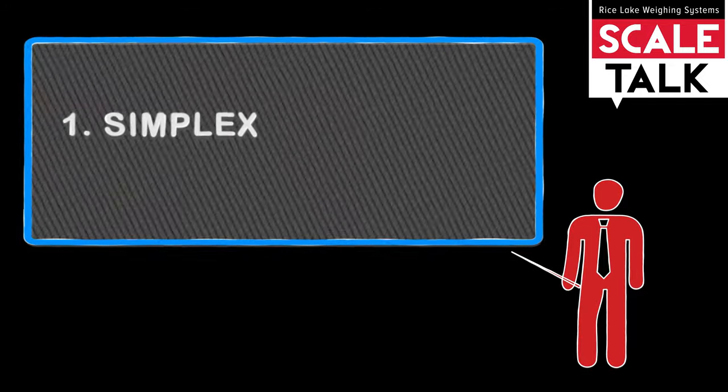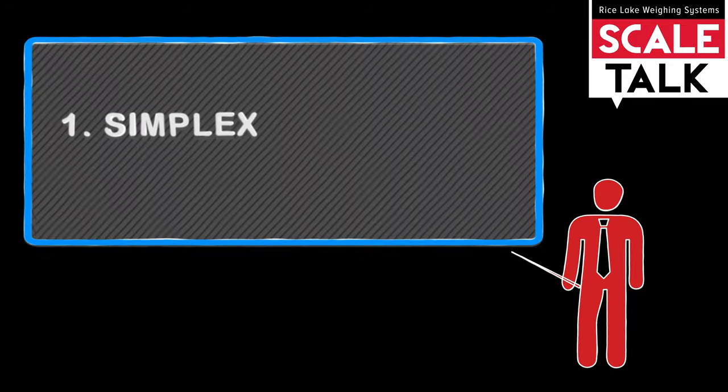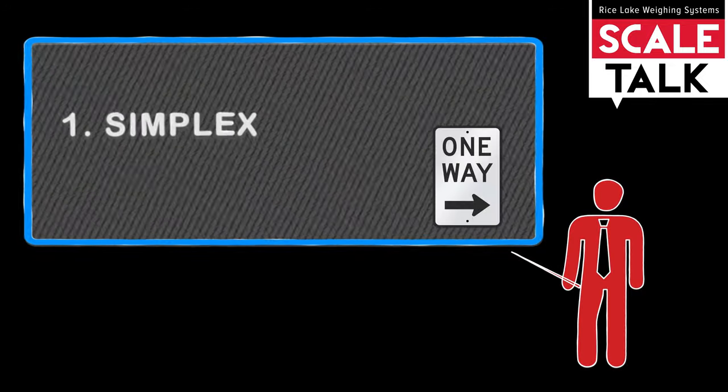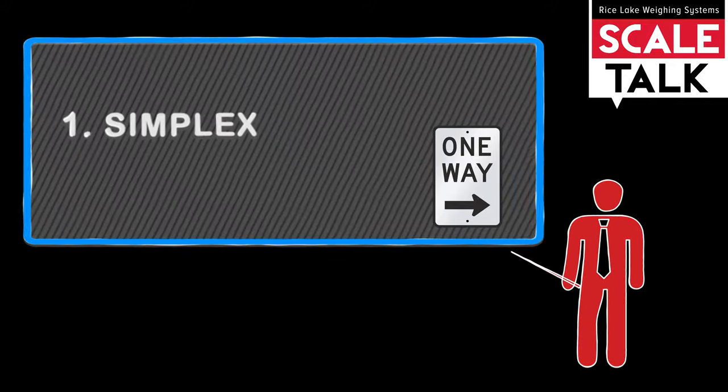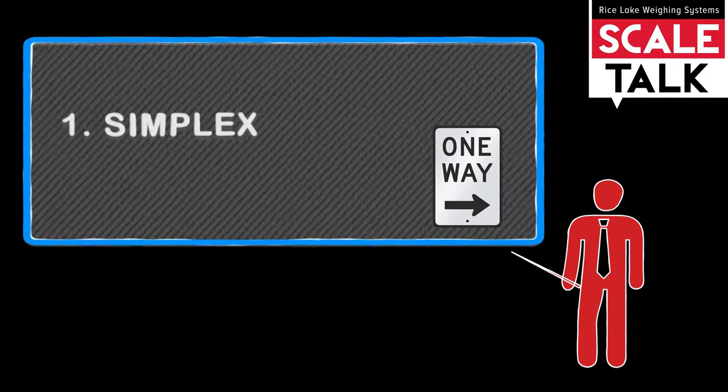The first type is simplex. In this method of communication, information can only travel in one direction. A device simply transmits information, and another device receives it.